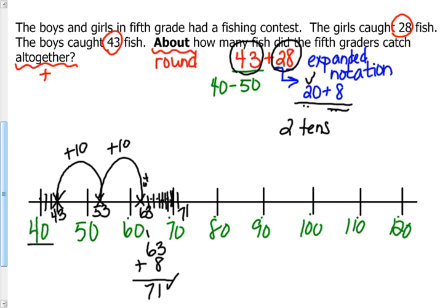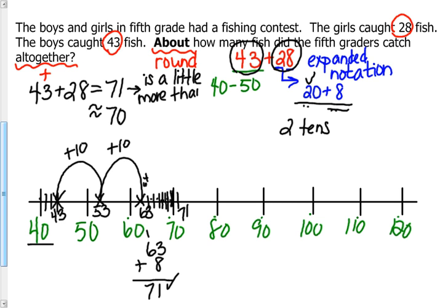So now up at the top I'm going to rewrite 43 plus 28 is equal to 71. Because we are estimating, we need to approximate this, so it's approximately 70, because 71 is closest to 70 as its multiple of 10. Which means 71 is a little more than 70, and it shows us just that on our number line. We can see that 71 is just a little bit more than our line for 70.